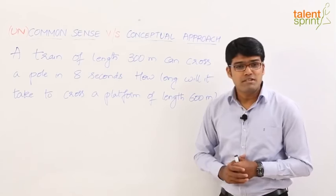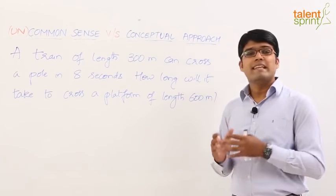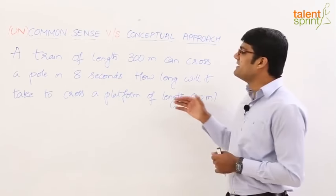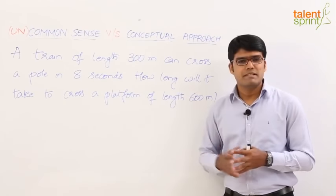A train of length 300 meters can cross a pole in 8 seconds. How long will it take to cross a platform of length 600 meters?